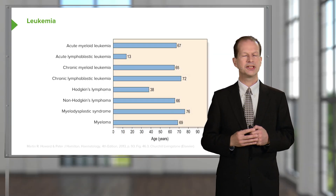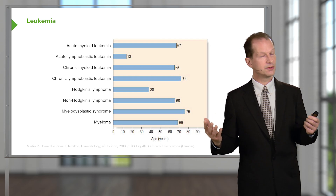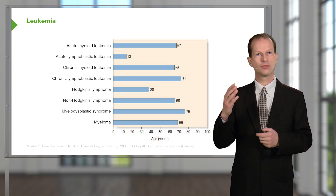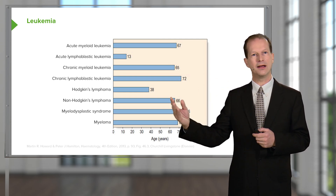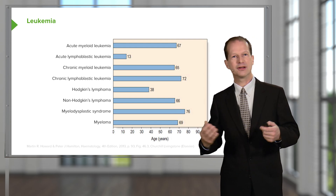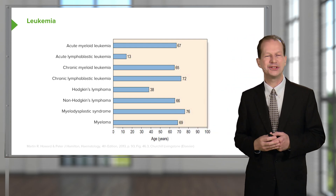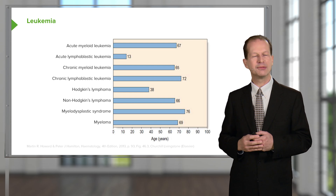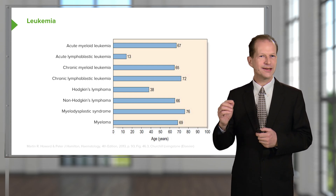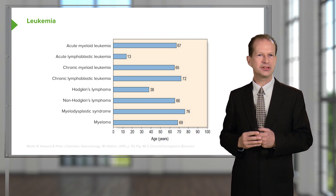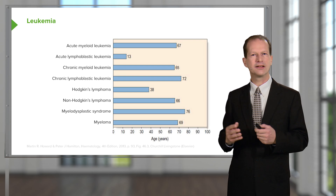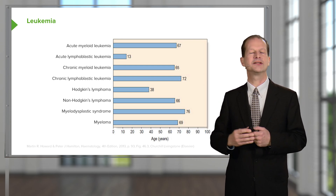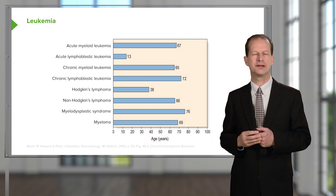Let me introduce you to leukemia. The word comes from Greek and means white blood. That is an interesting phrase because it reminds us that the tumor cells are in the blood — too many white cells in the blood and the bone marrow.